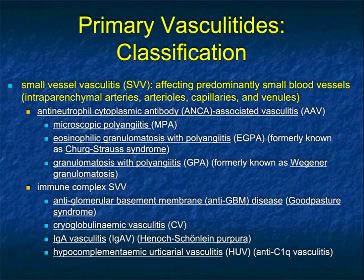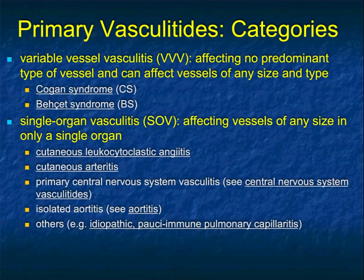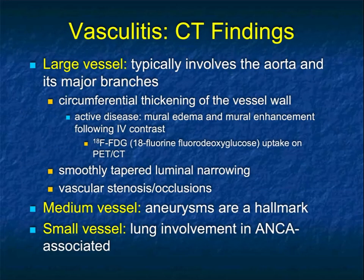We also talk about variable vasculitis, which can affect any size vessel. The two entities there are Cogan syndrome and Behçet syndrome — things we rarely see. There's also single organ vasculitis, affecting vessels of any size in a specific organ, including isolated aortitis and cutaneous leukocytoclastic angiitis. For us practically, it's mainly large, medium, and small vessels — particularly large and medium — that we're going to encounter in practice.